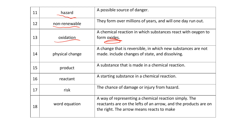A change that is reversible in which new substances are not made — including changes of state and dissolving — is a physical change. It's a bit like putting sugar in your tea; there's no chemical change, that is a physical change. A substance that is made in a chemical reaction is a product, and a starting substance in a chemical reaction is a reactant.